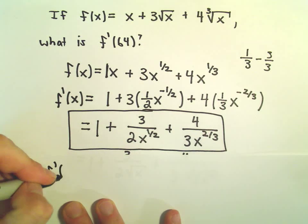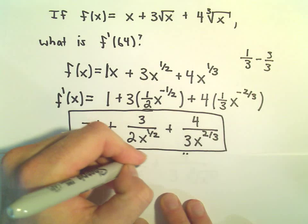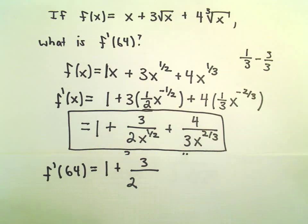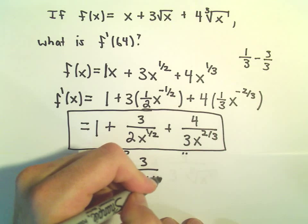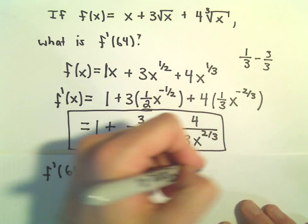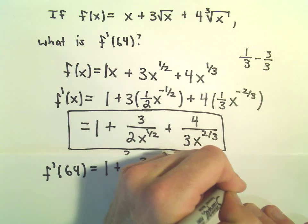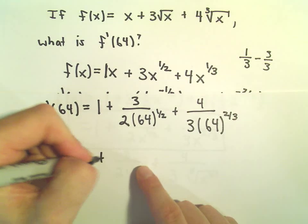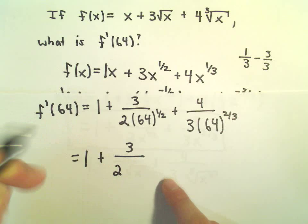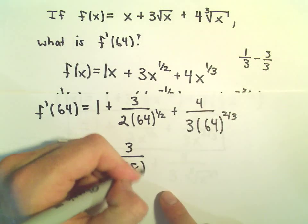So when we do f prime of 64, we get 1 plus — and suppose you didn't have a calculator — you would have 3 over 2 times 64 to the 1 half, and then 4 over 3 times 64 raised to the 2 thirds power. So we get 1 plus 3 over 2 times — well, 64 to the 1 half is just the square root of 64, which is 8.